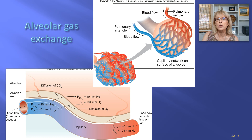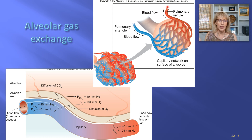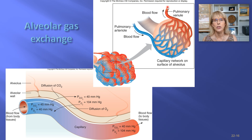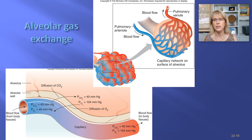As the blood travels across the capillaries of the alveolus, it is going to throw away the CO2 and pick up oxygen. As it leaves the capillary bed, it is going to be in a pulmonary vein, it's going to be red, and it's going to head back to the heart so that the heart can send it out through the aorta to distribute all of this lovely oxygen.